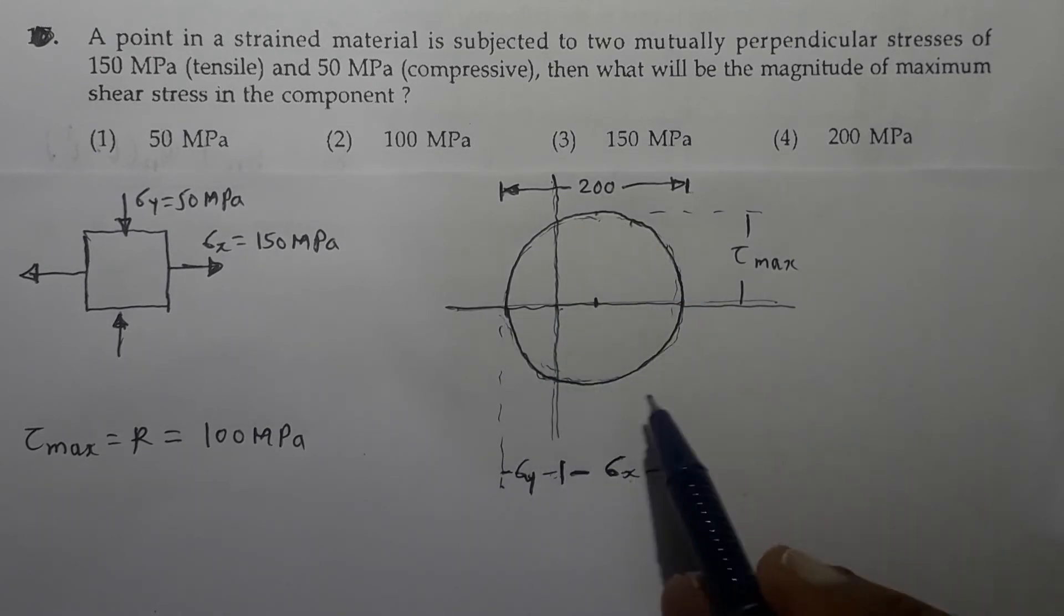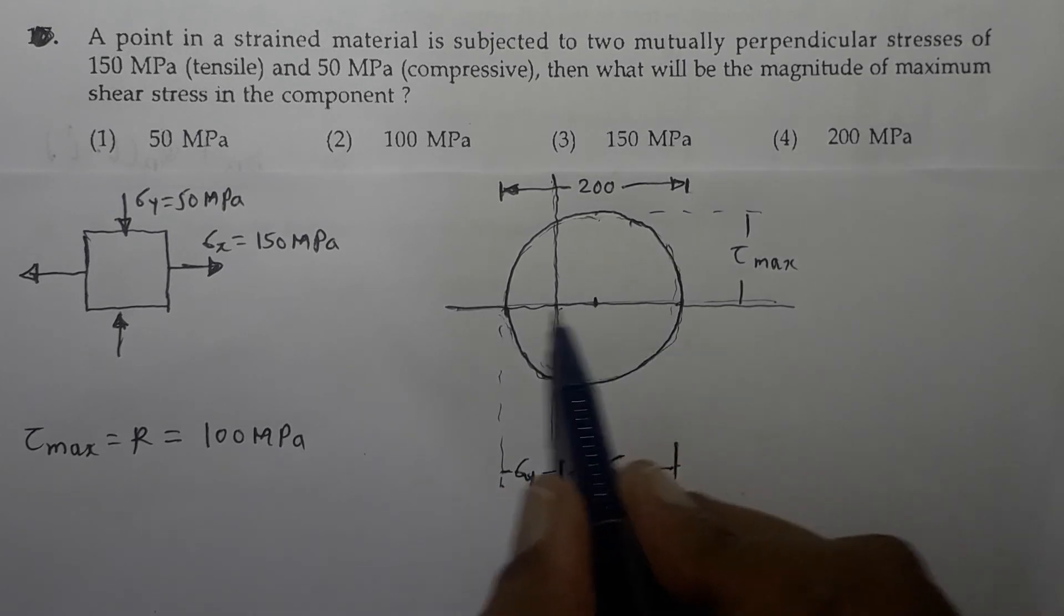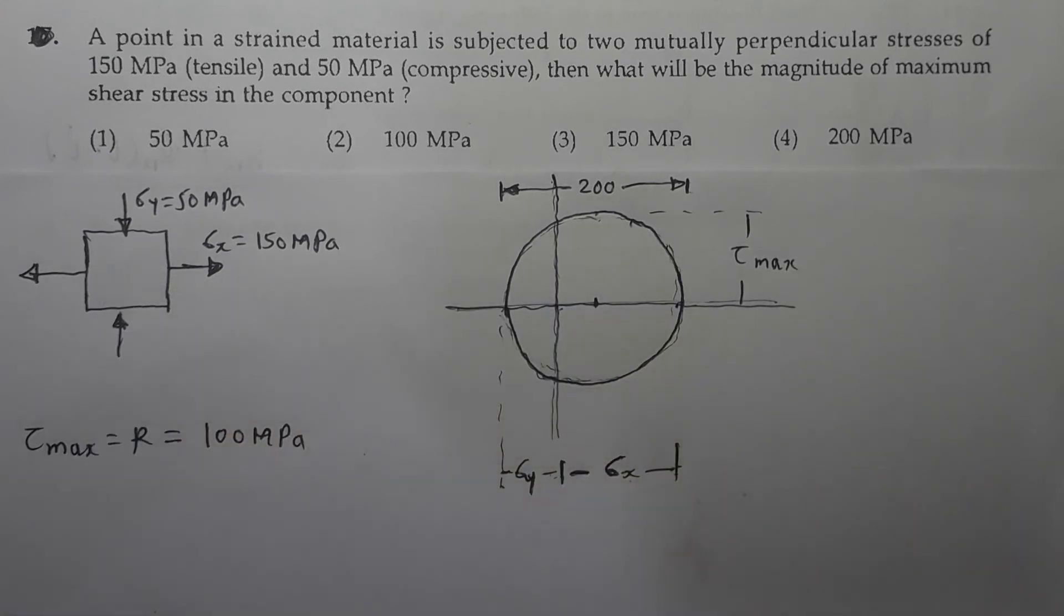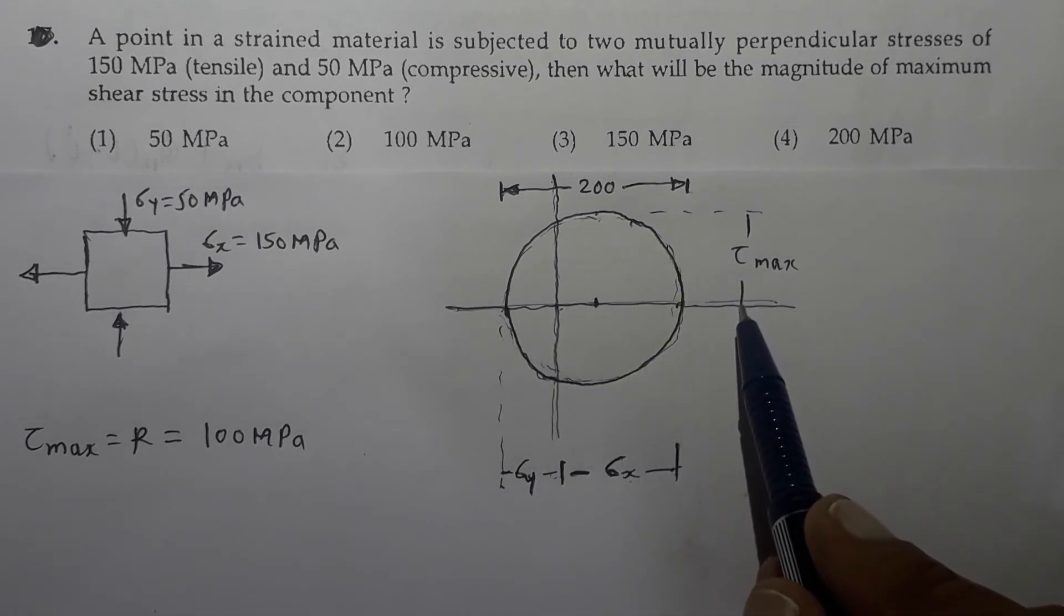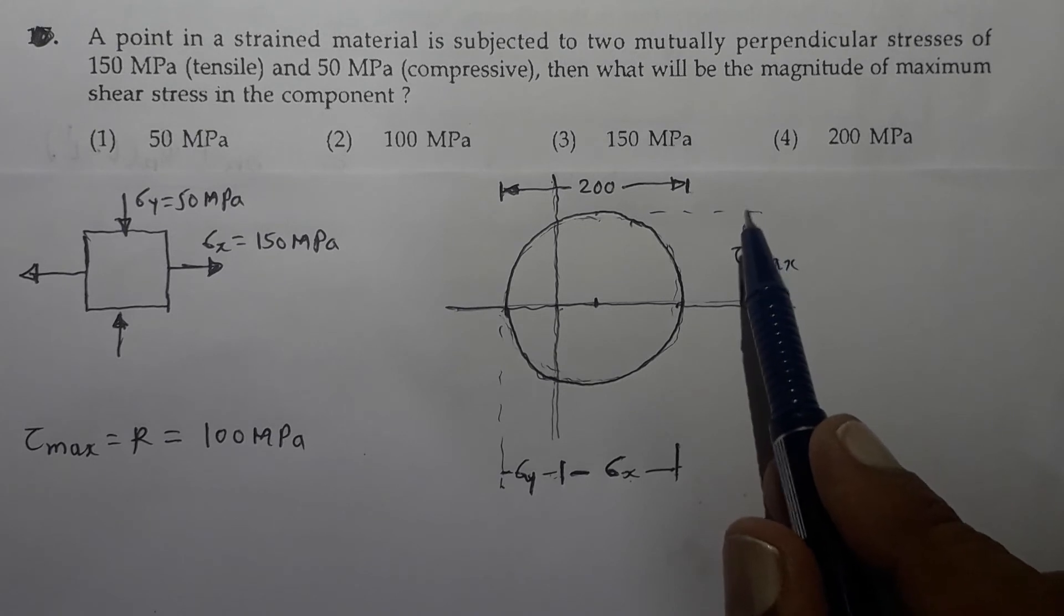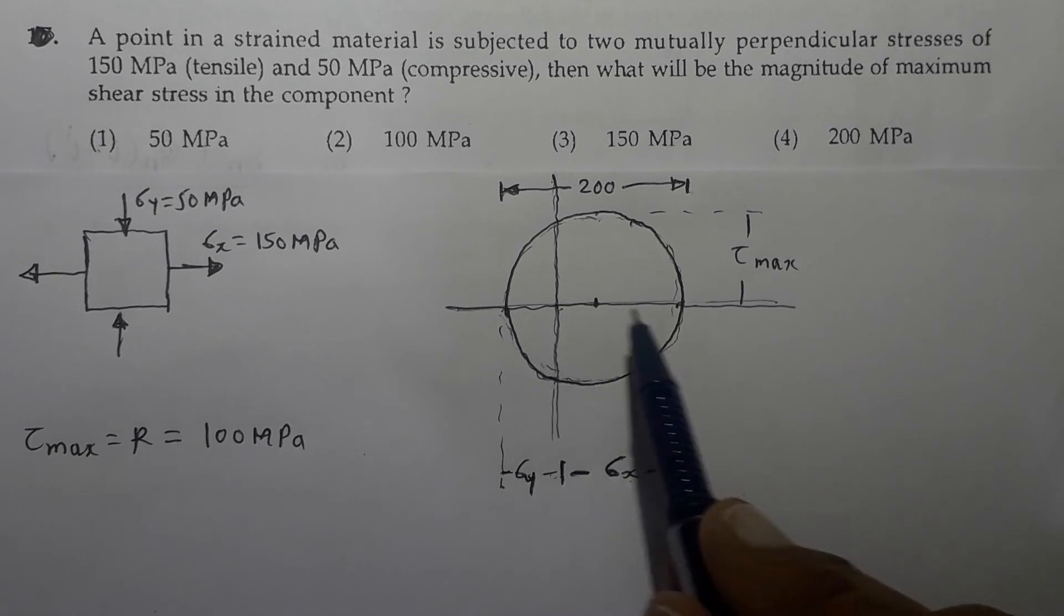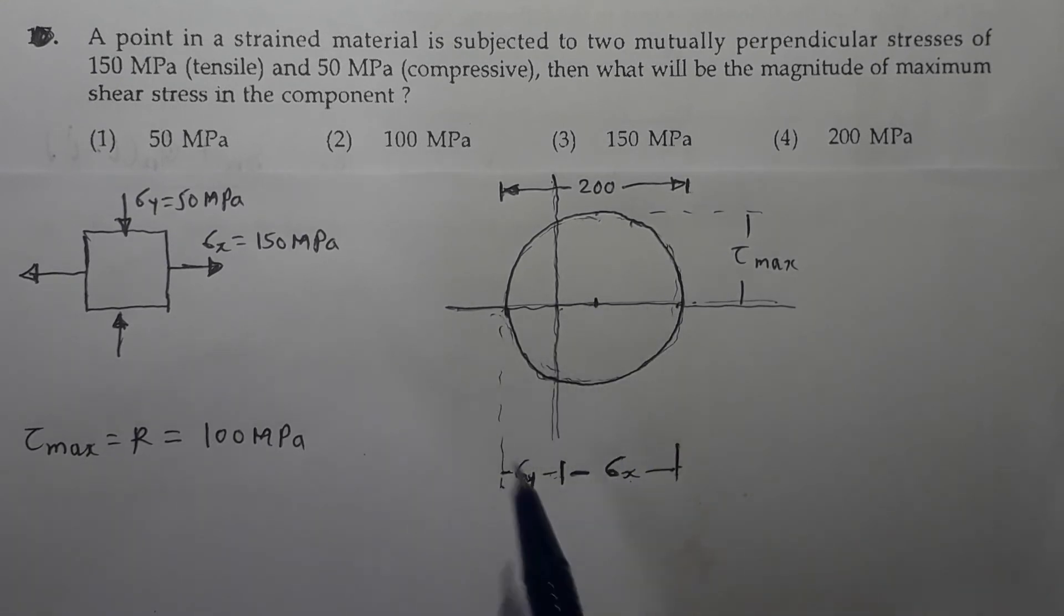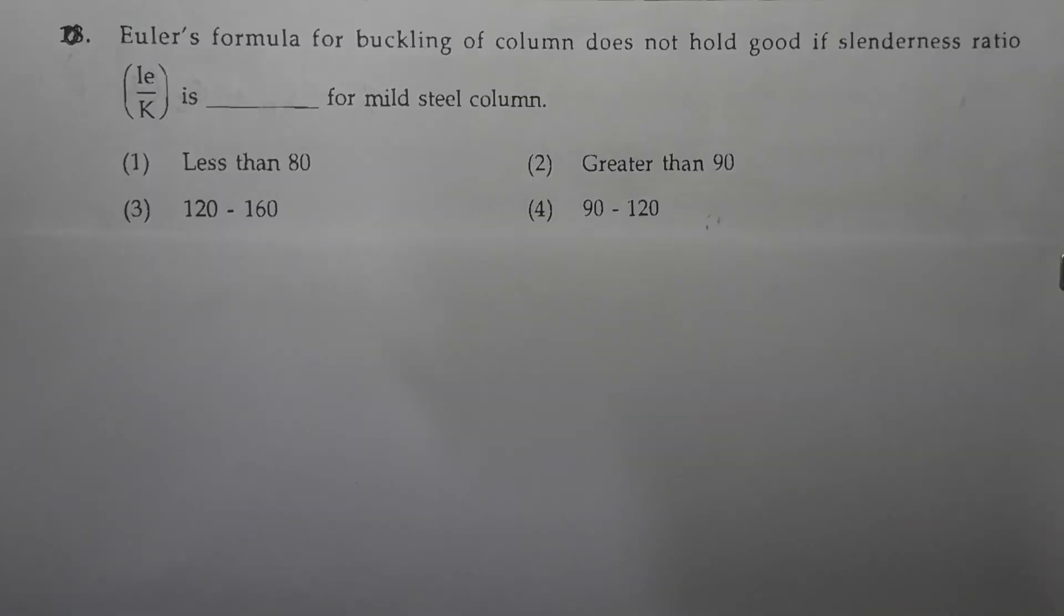So this Mohr circle can be drawn by considering the midpoint of this total length which will be 100 mm on both sides. So consider 100 mm as a radius and draw a circle. Now maximum shear stress is to be measured along Y axis. So tau max will be this radius. This radius is nothing but 200 divided by 2 which is 100 and that is why the correct option for this question is 100 MPa, option 2 is the correct one.